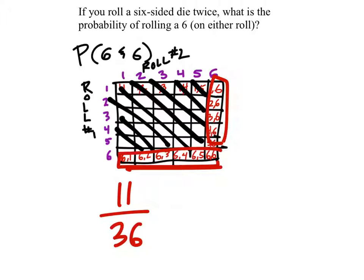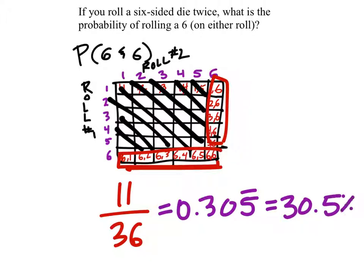And that is the fraction. That's as far as we can take that fraction. But 11 divided by 36 would give us 0.305 repeating, which would be 30.5% repeating.